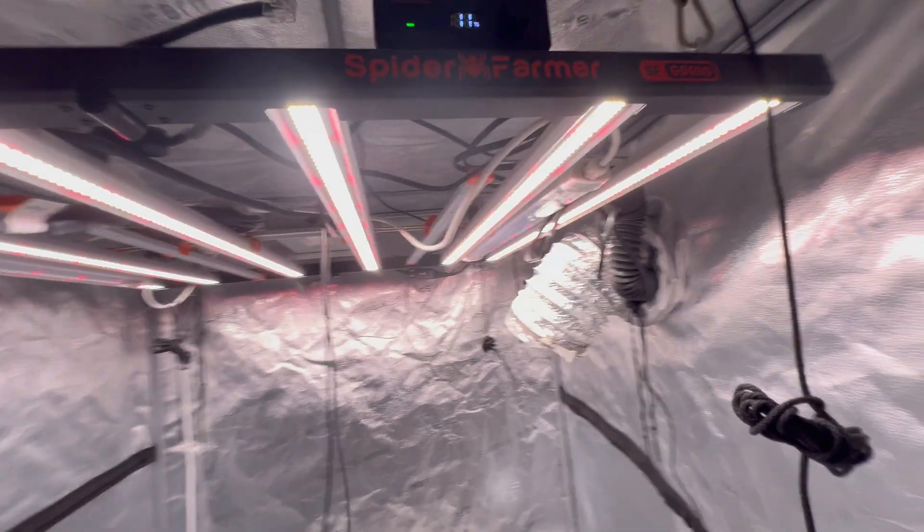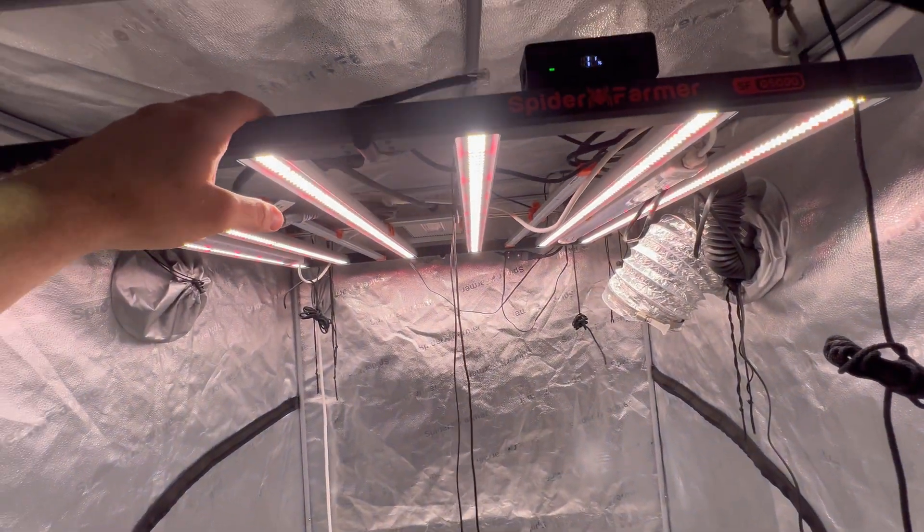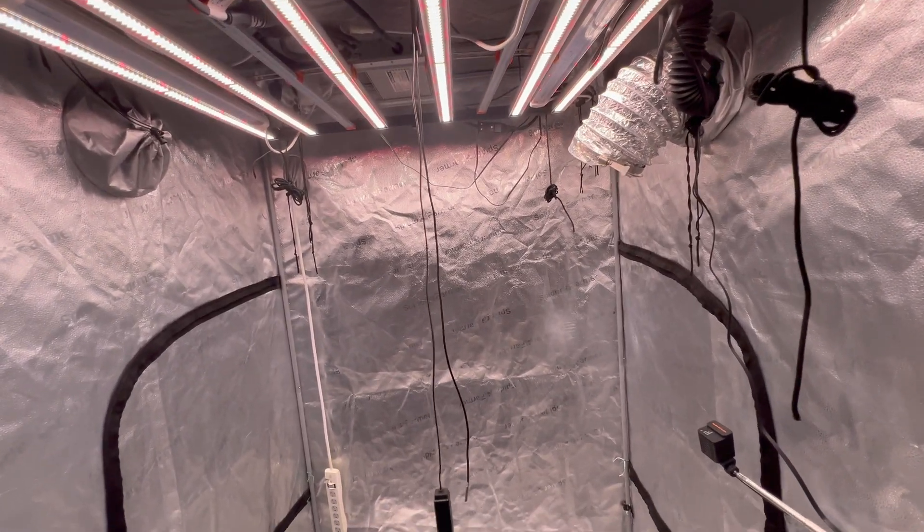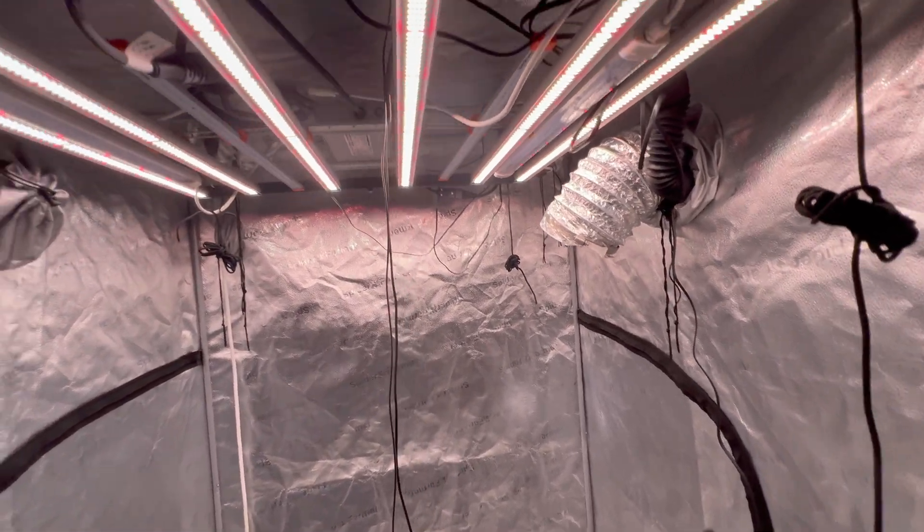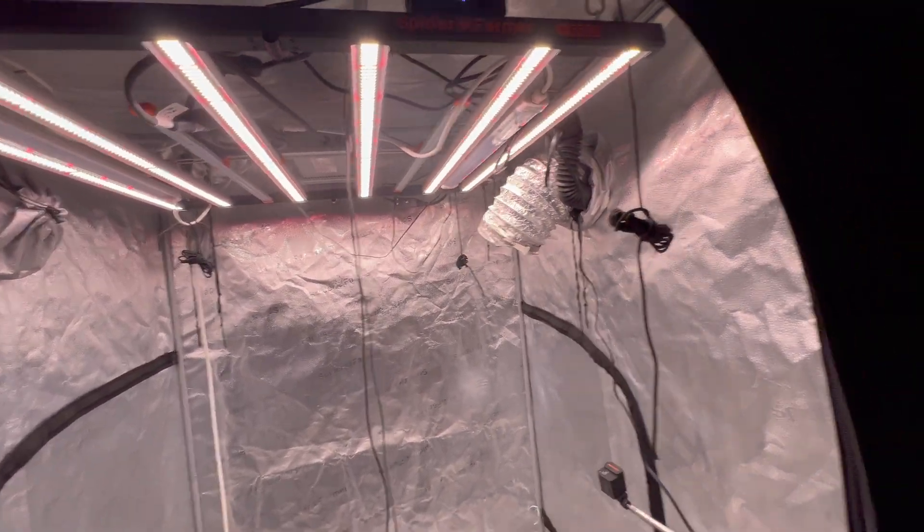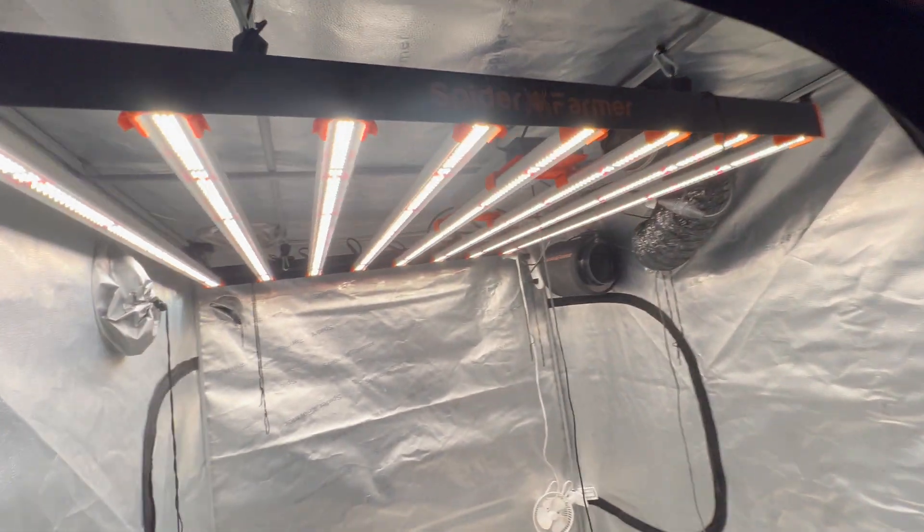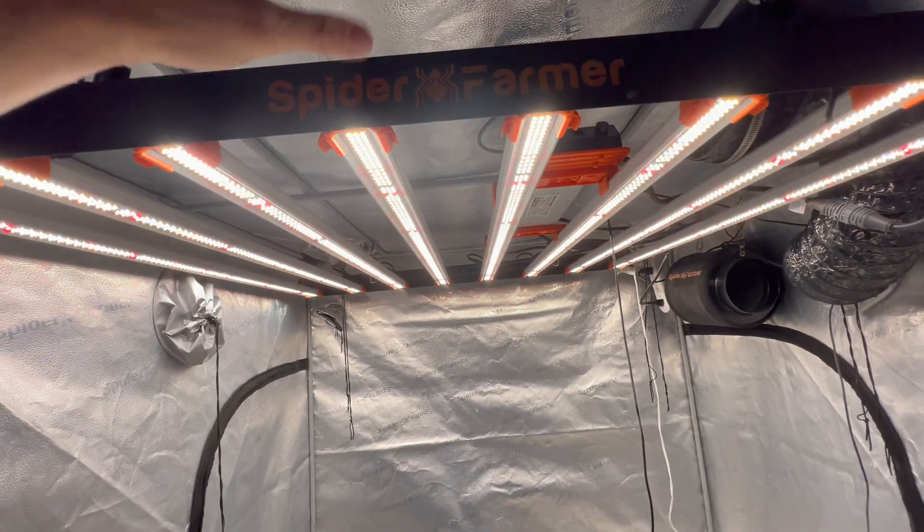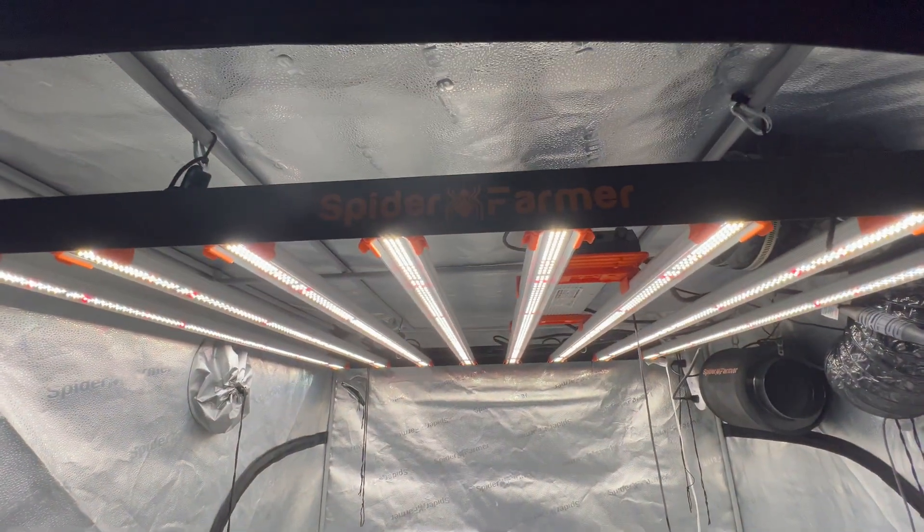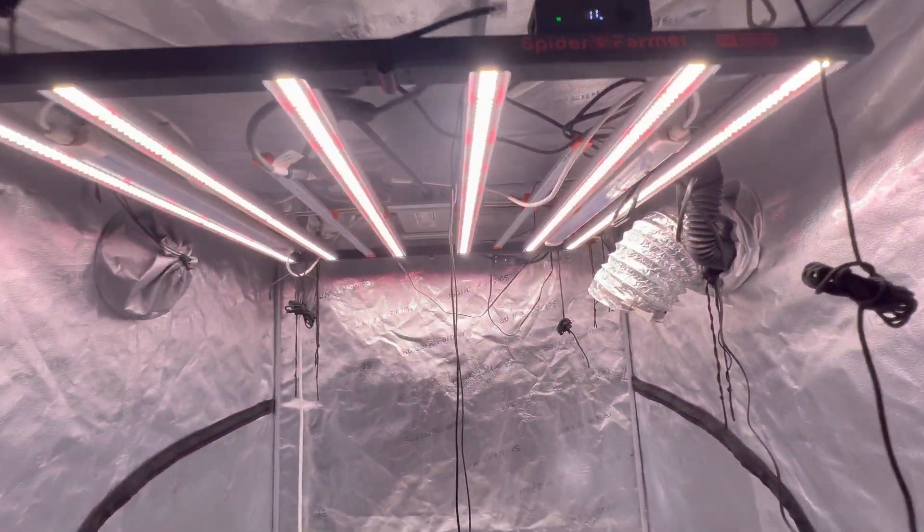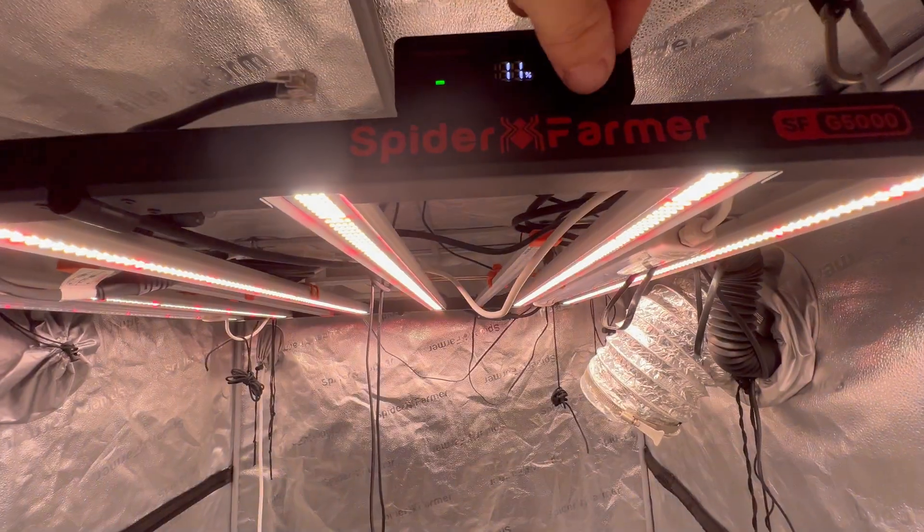11 is the lowest setting for this light and actually all of the G series and SE series only go to 11. What I'm going to do is check it at 25, 50, 75, and 100 percent. I'm not only going to do it to this light, I'm also going to do it to my SE7000 in my 5x5. The SE7000 has a power output of 700 watts where the G5000 is 480 watts.